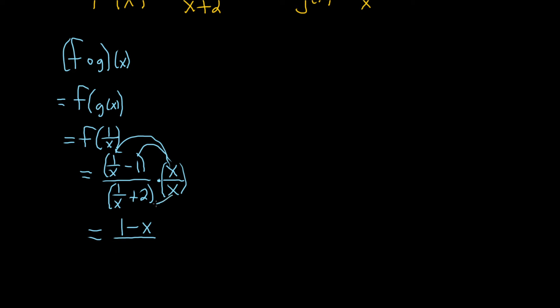And on the bottom, we have x times 1 over x, which is 1. And then x times 2 is 2x. Really, really clean. Just a really nice way to get rid of the fractions. Again, just multiplying by 1 in a clever way.